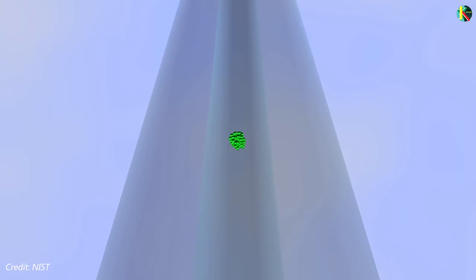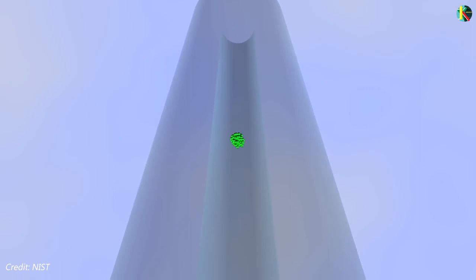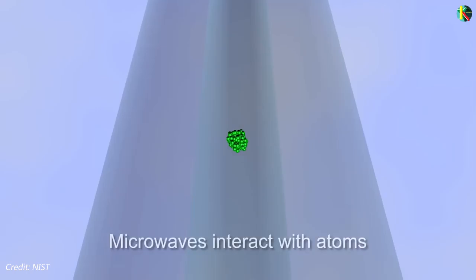Now, as the atoms interact with the microwave signal, their atomic states might or might not be altered depending on the frequency of the signal. The entire round trip of the ball takes about a second. At the finish point, another laser is directed at the cesium atoms.